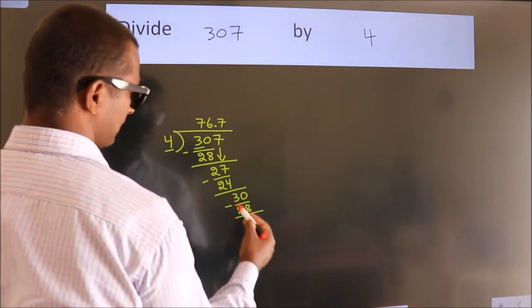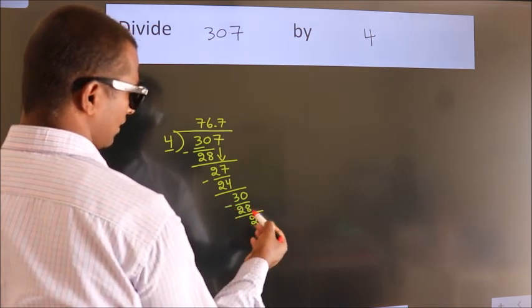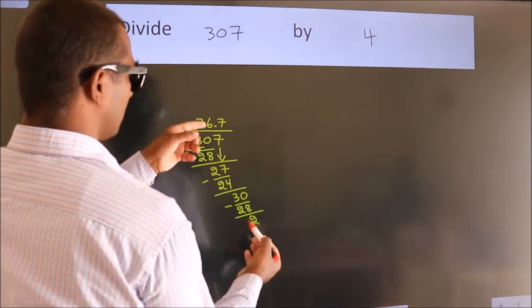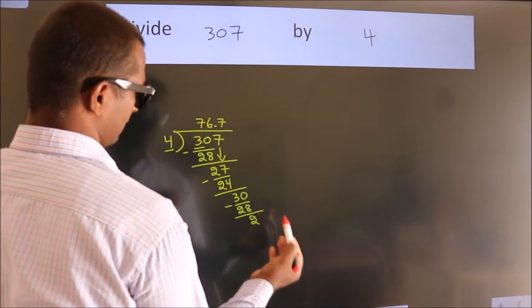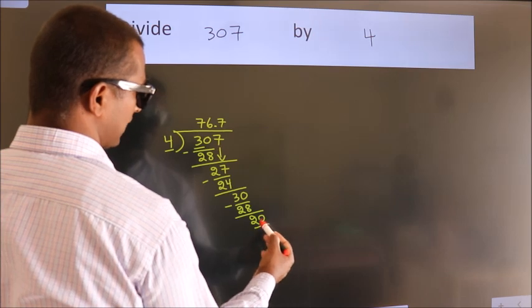Now we subtract. We get 2. After this, we already have the decimal. So directly take 0. So 20.